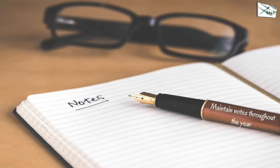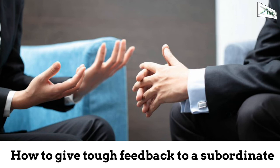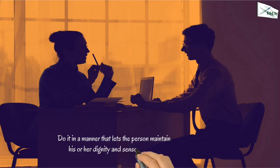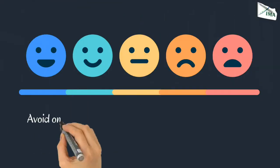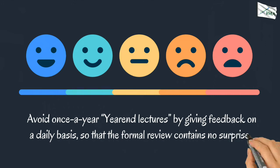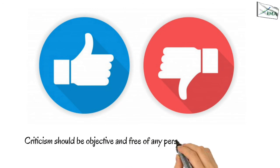Maintain notes throughout the year. How to give tough feedback to a subordinate: do it in a manner that lets the person maintain his or her dignity and sense of worth. Criticize in private and do it constructively. Avoid once-a-year lectures by giving feedback on a daily basis so that a formal review contains no surprises. Give positives first and then give development areas. Criticism should be objective and free of any personal biases on your part.